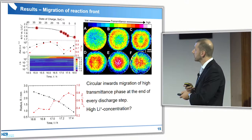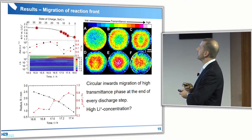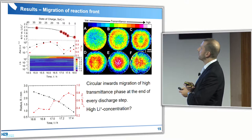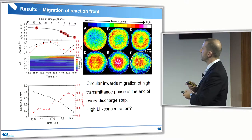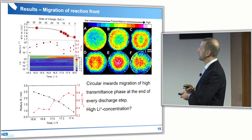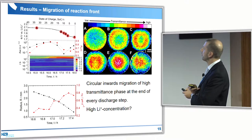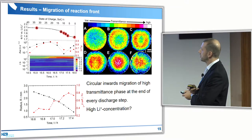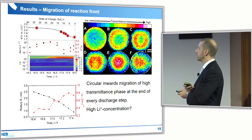This is another result showing a reaction front that appears at the end of every discharge step, from image A to F. It is a circular inward migration of high-transmittance phase at the end of every discharge. One assumption is that this is due to high lithium ion concentration migrating inward. You can measure the radius of this ring, take its first derivative to get the velocity, and find it is in the same range as sulfur dendrite growth — about 0.1 micrometers per second at maximum.